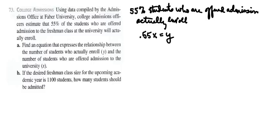When we want to use a percent in a calculation, we have to convert it to a decimal form. So we're going to use 0.55, and X is the number of students who are offered admission. So 55% of the students, or 0.55 times X, will equal the number who actually enroll, which is Y. So 0.55X is equal to Y, or you can say Y is equal to 0.55X.